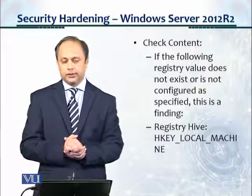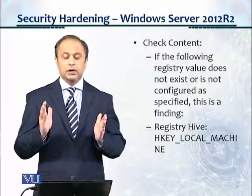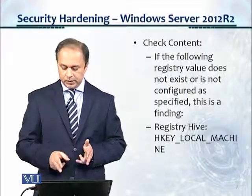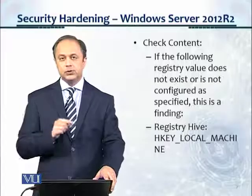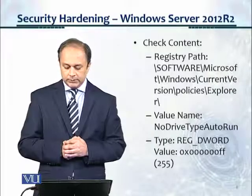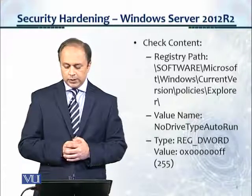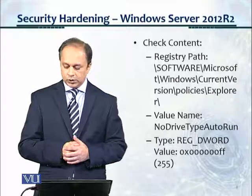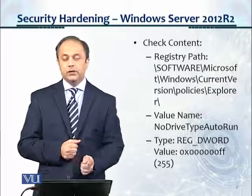Here's the check content. If the following registry value does not exist or is not configured as specified, this is a finding. Registry Hive: HKEY_LOCAL_MACHINE. The path is: \Software\Microsoft\Windows\CurrentVersion\Policies\Explorer. The value name is NoDriveTypeAutoRun. To check if this control is implemented, go to the registry and navigate to that path and verify the value.